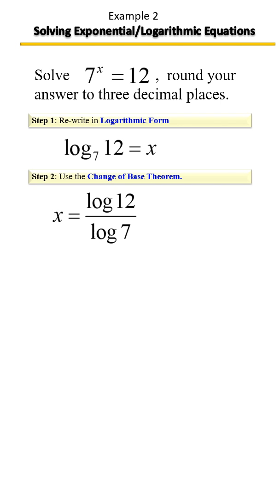Go ahead and get your scientific calculator out and key that in. What you should have rounded to three decimal places would be 1.277.